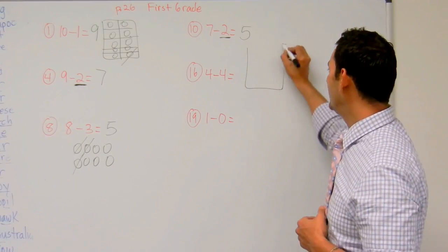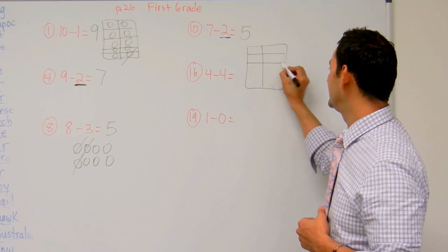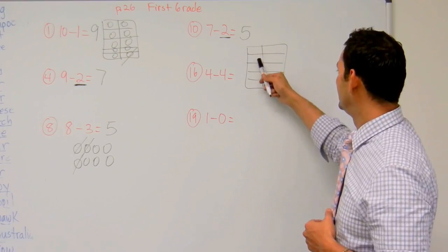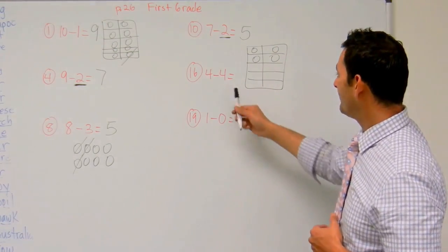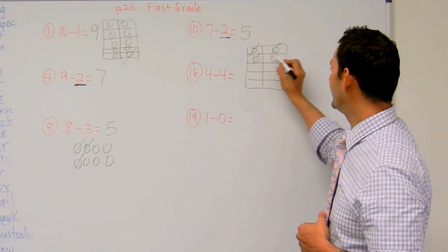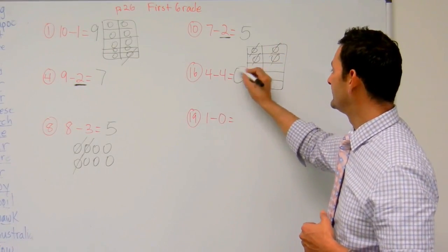Now let's take a look at this one. 4 minus 4. I'm going to go ahead and draw my 10 block. 1, 2, 3, 4. 4 minus 4. 1, 2, 3, 4. 4 minus 4 is 0.